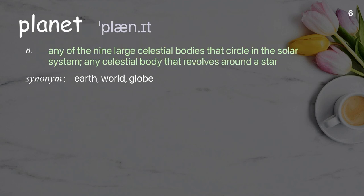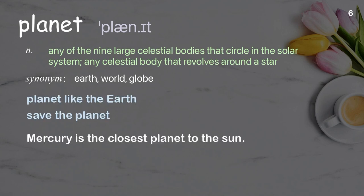Planet. Any of the nine large celestial bodies that circle in the solar system; any celestial body that revolves around a star. Examples: planet like the Earth, save the planet. Mercury is the closest planet to the sun.